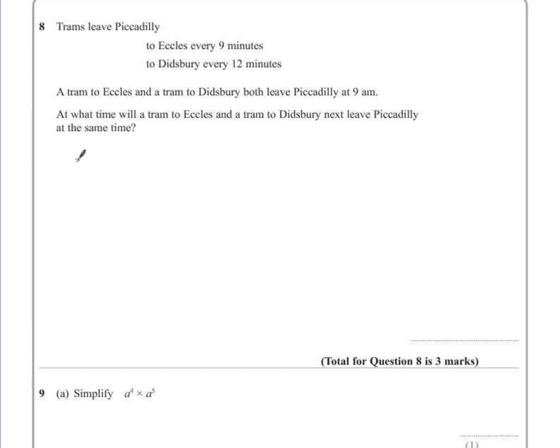So if we start with Eccles, the tram to Eccles will leave after 9 minutes, then another 9 minutes later, so 18, 27, 36, 45, 54. It could go on as long as we needed to because it is every 9 minutes.